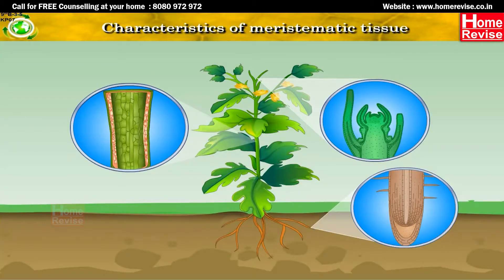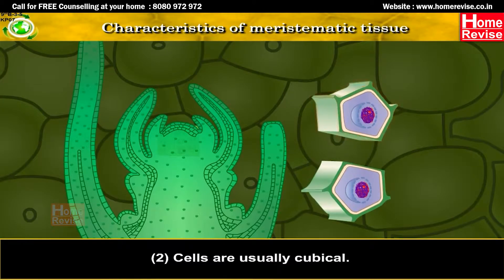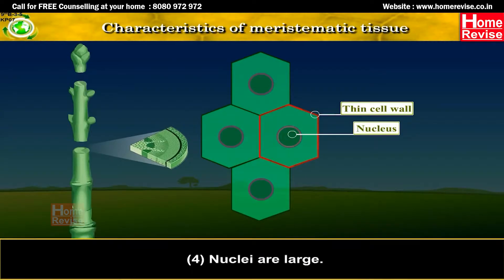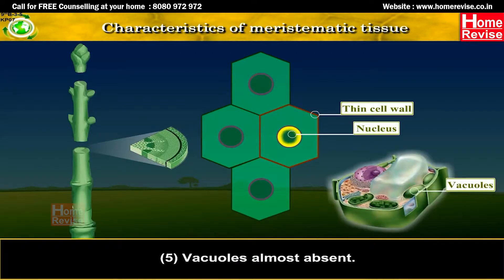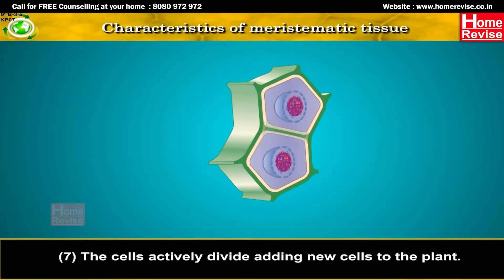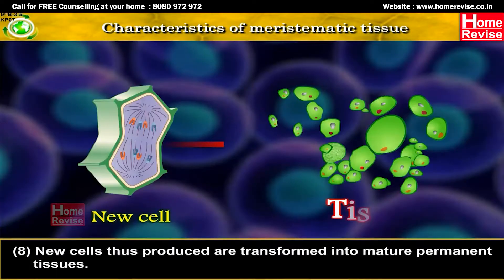Characteristics of meristematic tissue: 1. Cells are small. 2. Cells are usually cubical. 3. Cell wall is thin. 4. Nuclei are large. 5. Vacuoles are almost absent. 6. Cells are tightly packed with almost no intercellular spaces. 7. The cells actively divide, adding new cells to the plant.